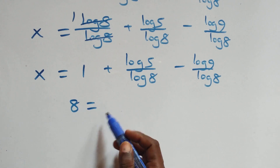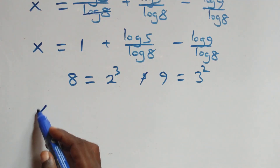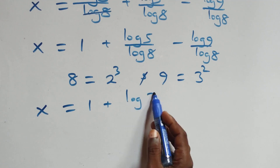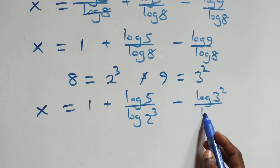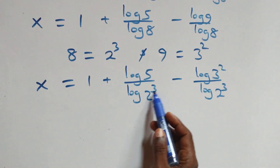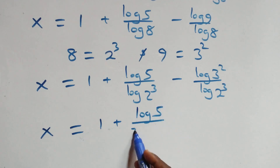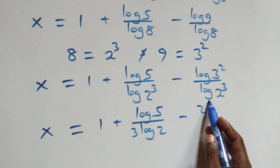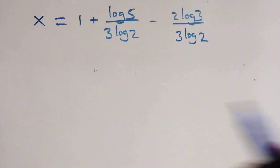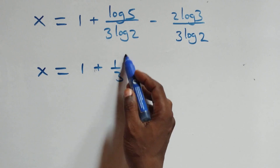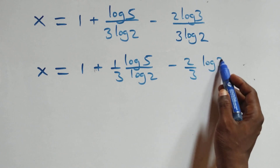Also, we can write 8 as 2 times 2 times 2, which is 2 raised to the power 3, and 9 as 3 times 3, which is 3 squared. So x equals 1 plus log 5 over log(2³) minus log(3²) over log(2³). Applying the power rule: x equals 1 plus log 5 over 3 log 2 minus 2 log 3 over 3 log 2.